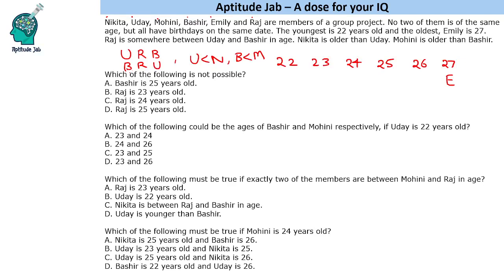Mohini is older than Udaya. Okay, so which of the following is not possible? We will have to check option by option. The first option says Bashir is 25 years old. If Bashir is 25, then Mohini, who must be greater than Bashir, can come above that — that seems quite possible. Now let's check if Raj being 23 years old is possible. We are given three cases for Raj: 23, 24, or 25 years old, and we have to check which of these would not be possible.